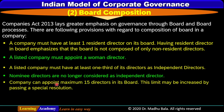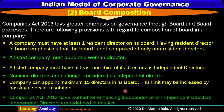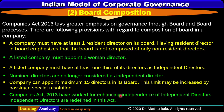A company can appoint a maximum of 15 directors on its board. This limit may be increased by passing a special resolution. The Companies Act 2013 has also worked to enhance the independence of independent directors, and independent directors are redefined in this Act.